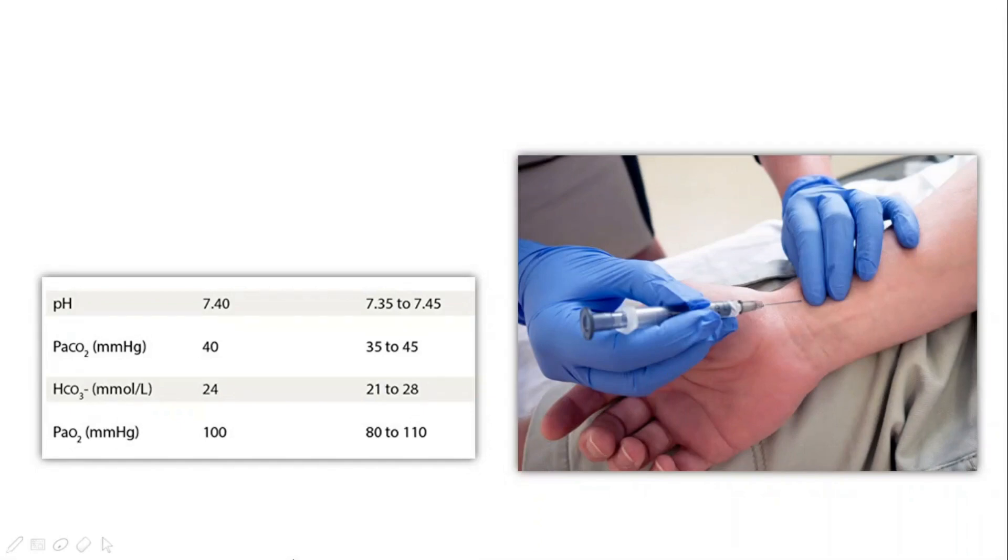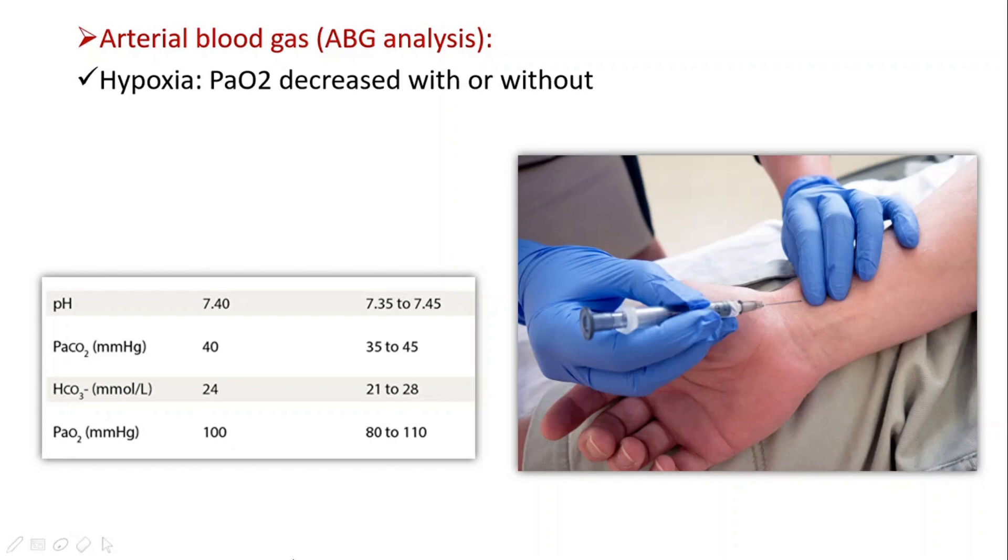Now before we conclude, let's discuss arterial blood gas analysis which is often done in casualties or emergency departments when patients present with acute exacerbations. It is a great leading step to determine what to do and what not to do. We often see hypoxia, which is decreased oxygen in the blood of COPD patients, with or without hypercapnia, which is increased carbon dioxide because of air trapping.